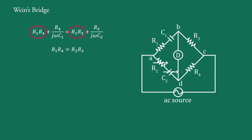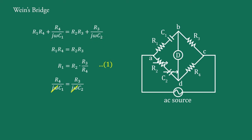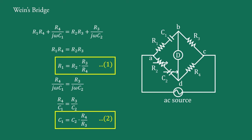Equating real and imaginary parts, we get R1·R4 = R2·R3, or R1 = R2·R3/R4 — say Equation 1. And R4/(jωC1) = R3/(jωC2). Cancelling jω from both sides, we have R4/C1 = R3/C2, or C1 = C2·R4/R3 — say Equation 2. These two formulas are the bridge balance conditions.